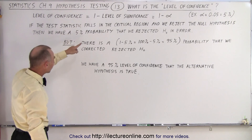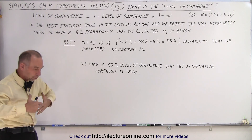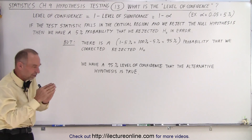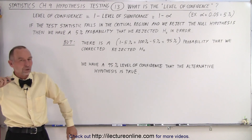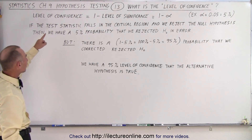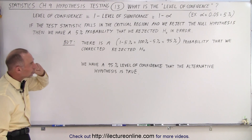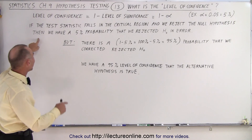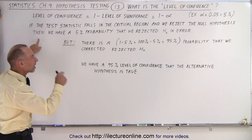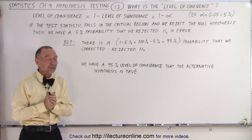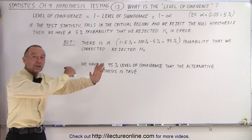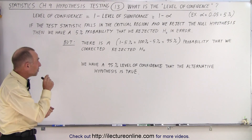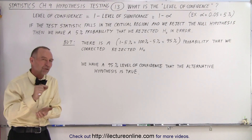If the test statistic falls in a critical region — remember that we're going to take a random sample, calculate the test statistic, and if that test statistic falls in the critical region, then we're going to reject the null hypothesis. If we reject the null hypothesis like we're supposed to when the test statistic falls in the critical region, then we have a 5% probability that we rejected that null hypothesis in error. We're not 100% sure; there's a 5% probability that we may have done so in error.